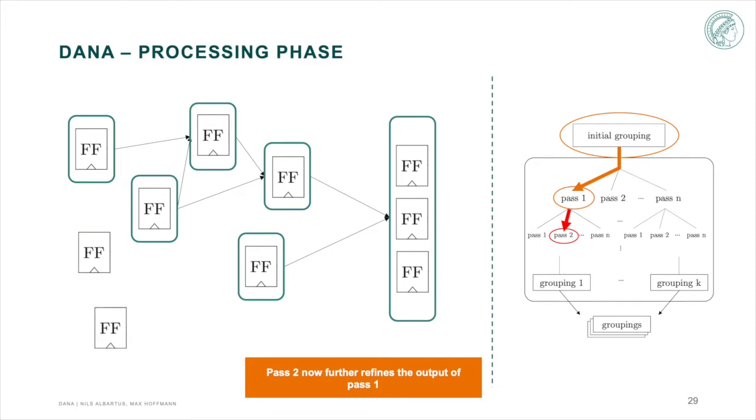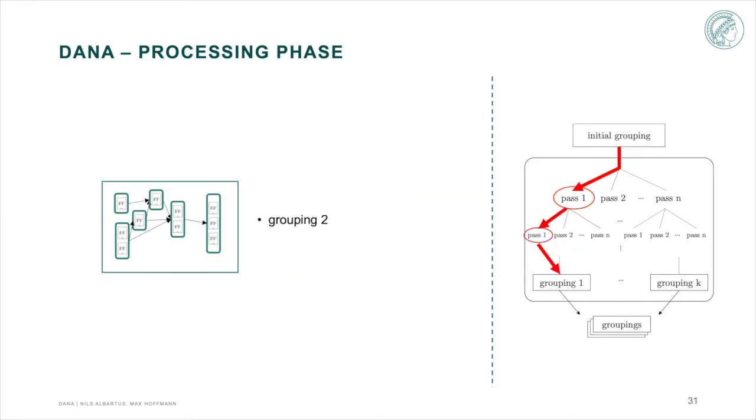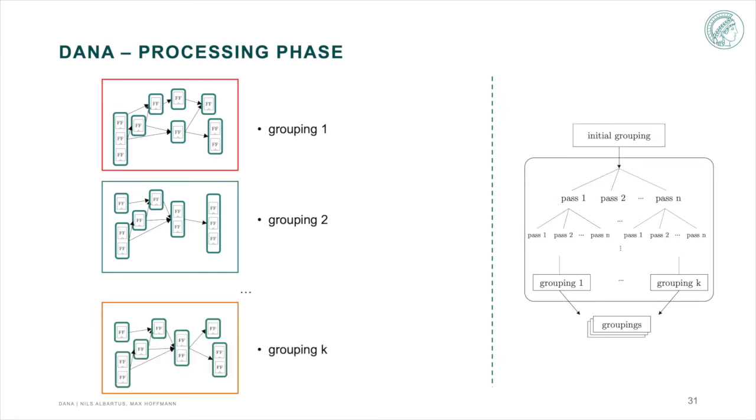Pass 2 may decide that these two flip-flops belong together and creates a new register. And maybe also these two. We end up with a grouping that may look like this. But we end up with many more groupings from all different pass combinations that we are going to store and process later in the evaluation phase.